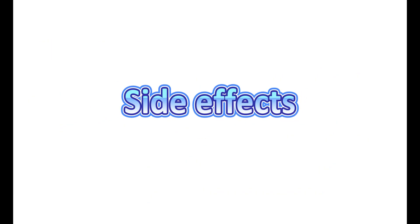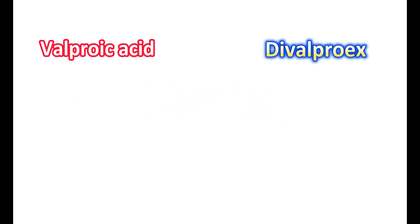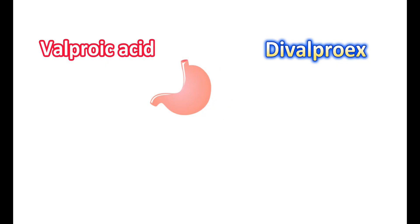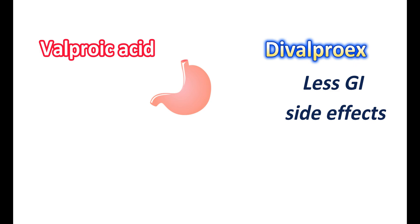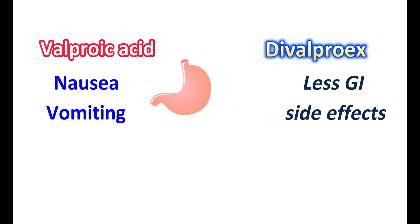Side effects: Since divalproex is a combination of valproic acid and sodium valproate, it produces a slow release of medication and therefore has less gastrointestinal side effects. In particular, valproic acid can produce nausea and vomiting; such side effects are less observed with divalproex sodium.